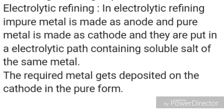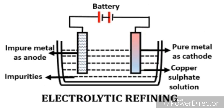The fourth method is electrolytic refining. The impure metal is made the anode and pure metal is made the cathode, placed in an electrolytic cell containing a soluble salt of the same metal. The required metal gets deposited on the cathode in pure form. The negative electrode is the cathode and the positive electrode is the anode. In electrolytic cells, graphite rods are used as electrodes — graphite is a non-metal but a good conductor of electricity.